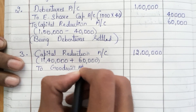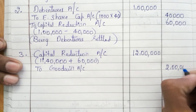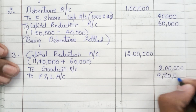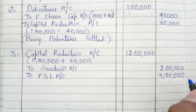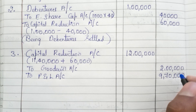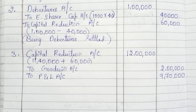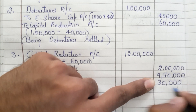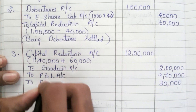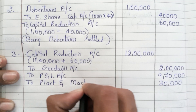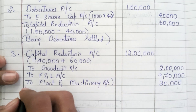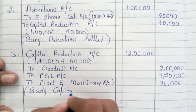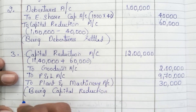To Goodwill Account — the value of goodwill is ₹2 lakh. Second, to P&L Account — the value is ₹9,70,000. Next, using the remaining balance we need to write off machinery: ₹12 lakh minus ₹2 lakh minus ₹9,70,000 gives a balance of ₹30,000. This balance is used to write off plant and machinery. To Plant and Machinery Account ₹30,000. The narration: being Capital Reduction Account adjusted.